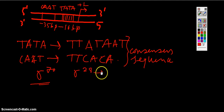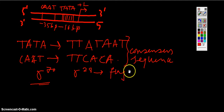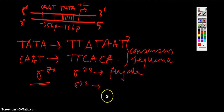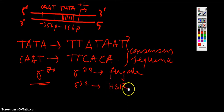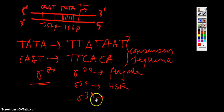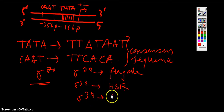Sigma-28 is responsible for synthesizing genes for flagellar synthesis. Then sigma-32 is there, which transcribes the mRNA for the protein which is necessary for the heat shock response. And there is sigma-38, which synthesizes mRNA during the stationary phase and also during oxidative stress.